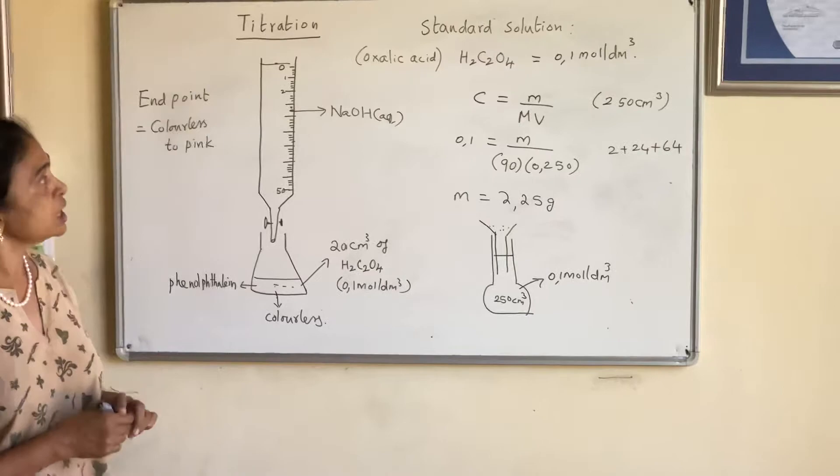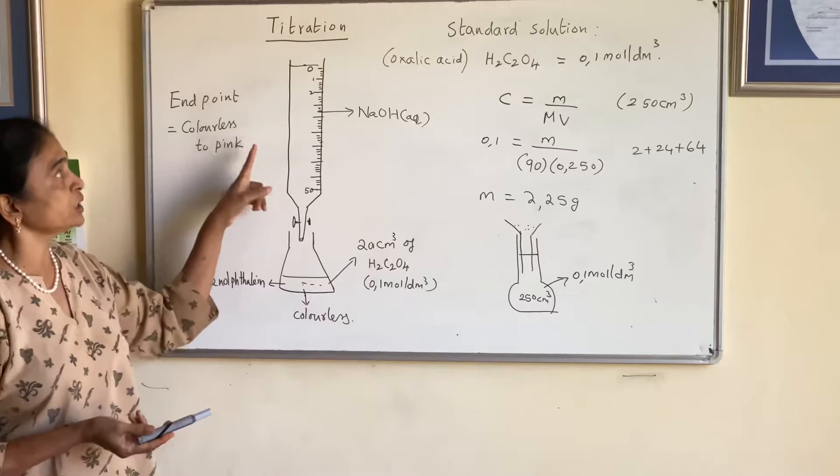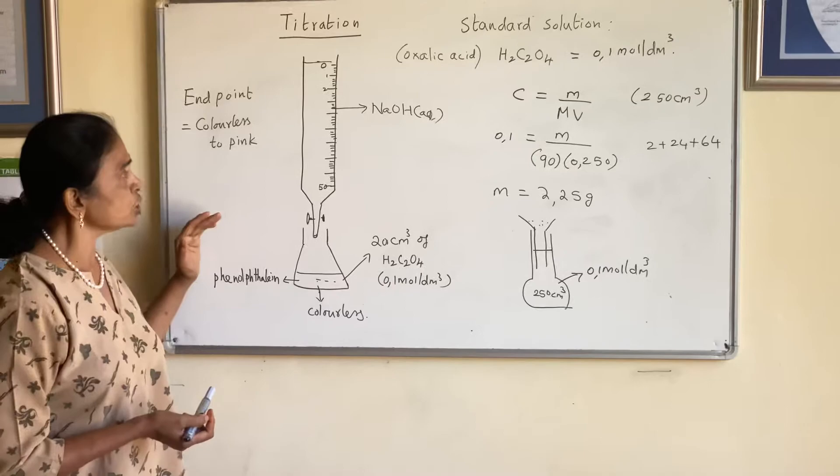The concentration of that standard solution is 0.1 mol per dm³. This is the standard solution — you know the concentration of this chemical. Now you have sodium hydroxide whose concentration you don't know, but we can use titration to find it.